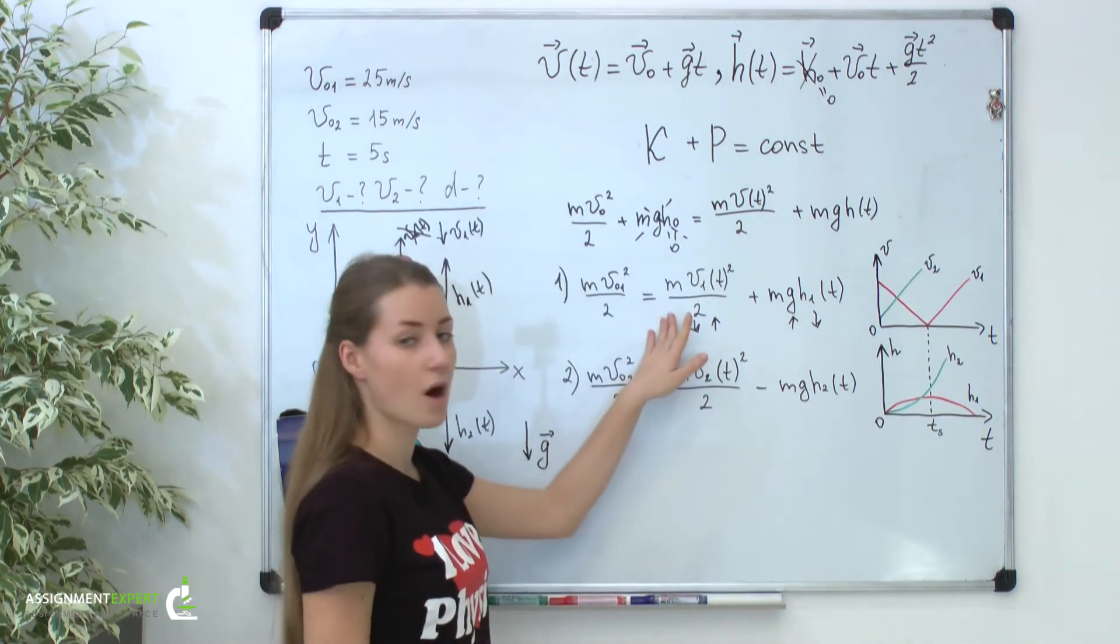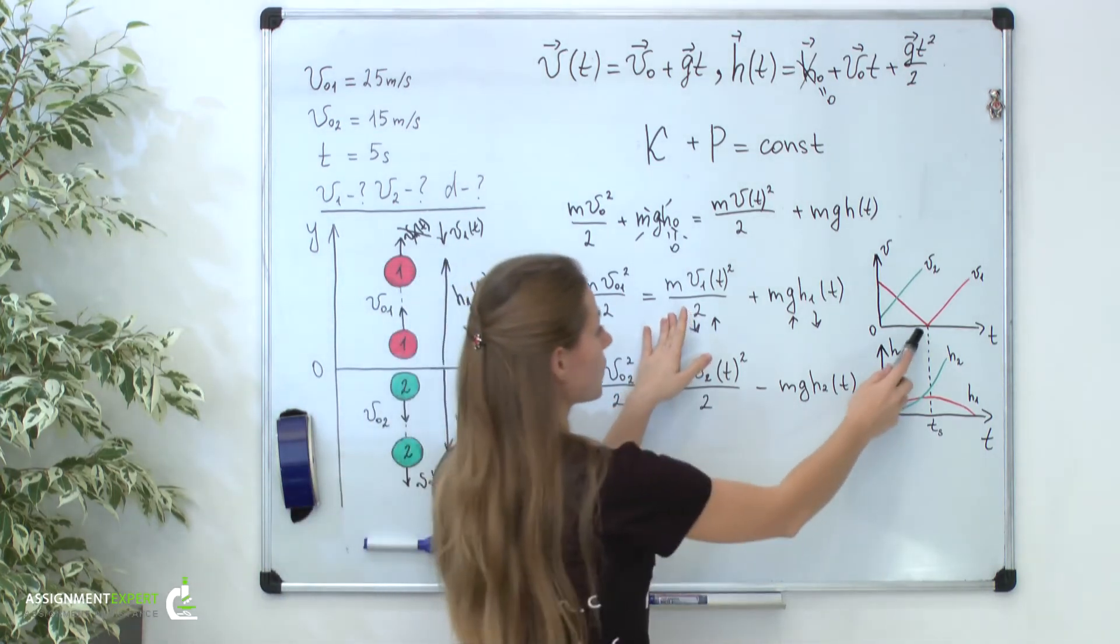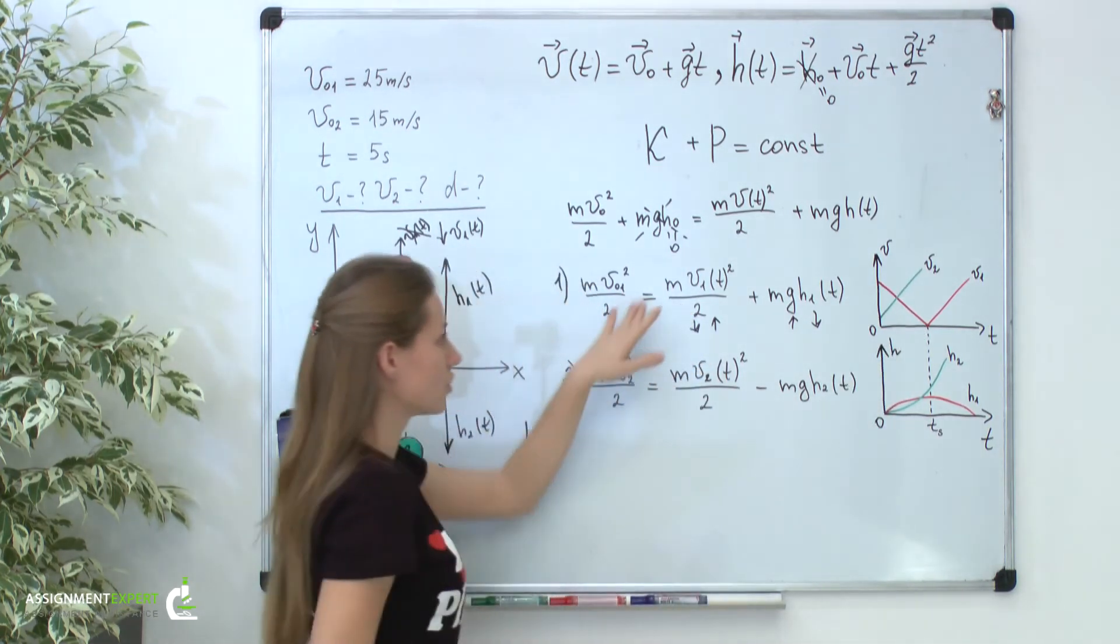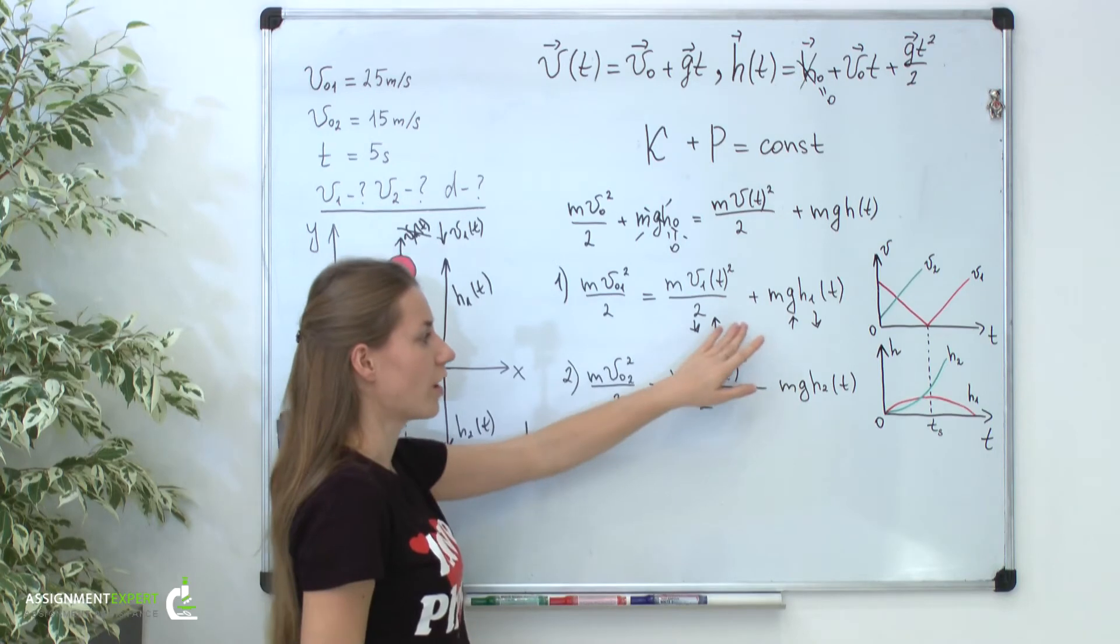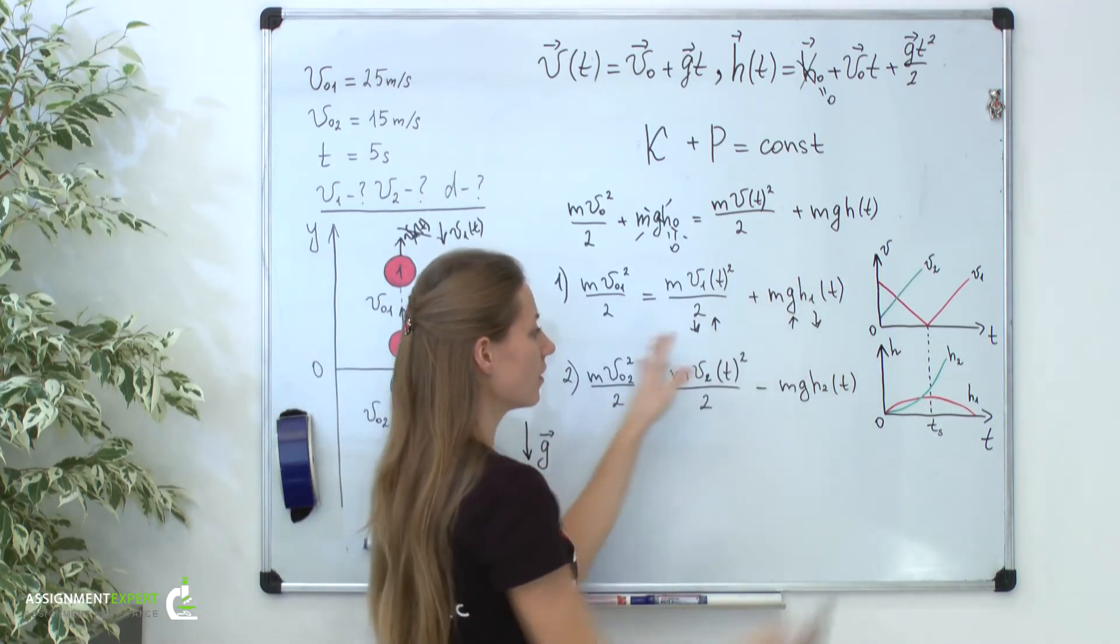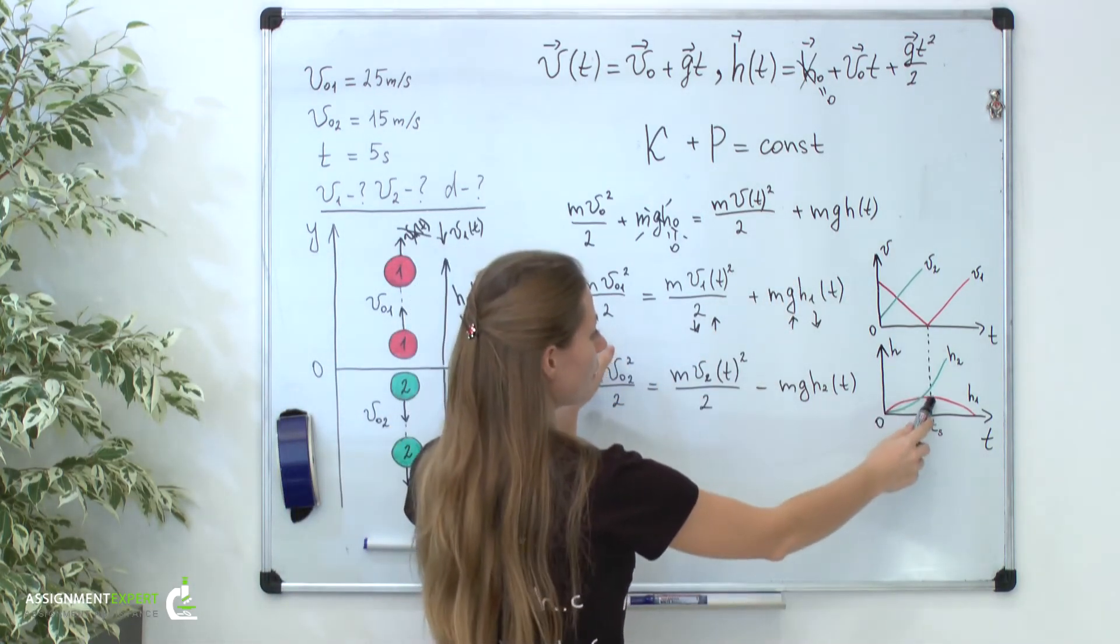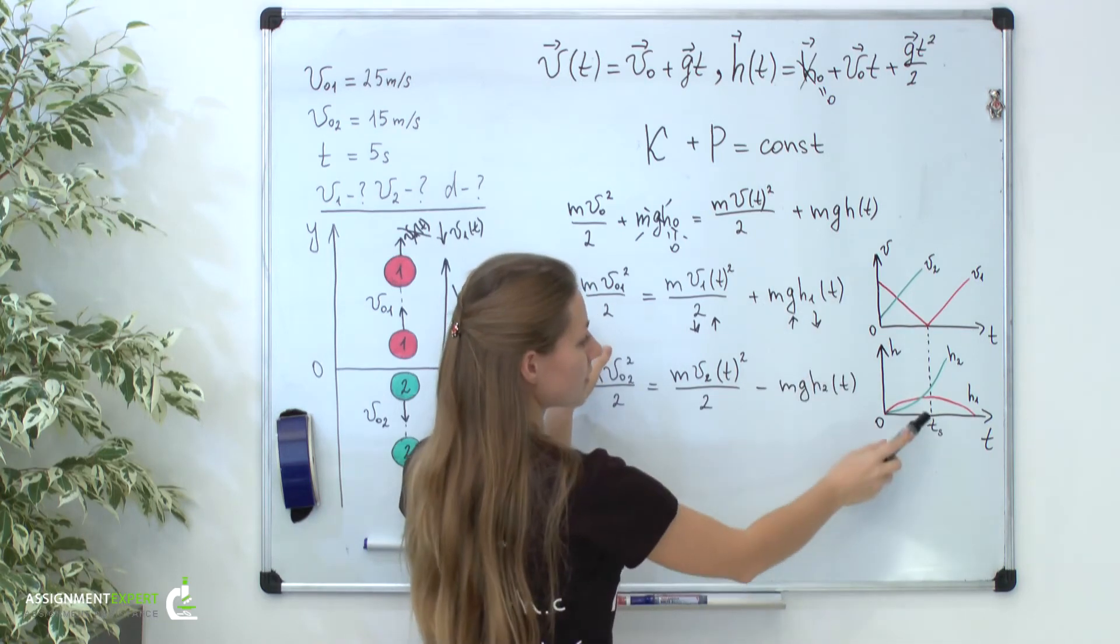Moreover, at the point where our kinetic energy is zero, initial kinetic energy will be entirely transformed to the potential energy. This is exactly our point when the potential energy is maximal.